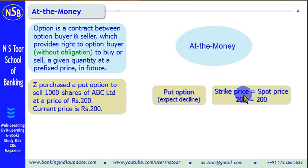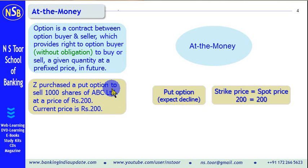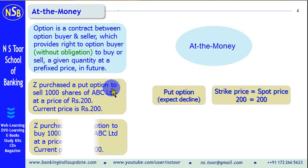So, strike price is equal to current price. Strike price is Rs. 200 and current price is Rs. 200. Hence, if this option is used by Z, he is not going to make any profit and he is not going to make any loss also.